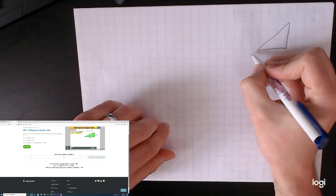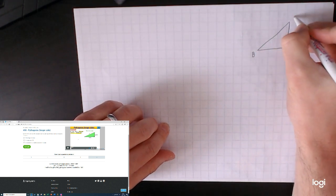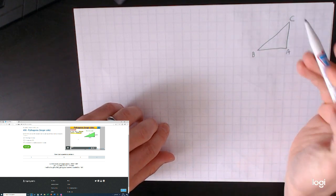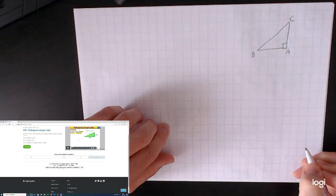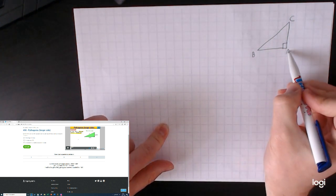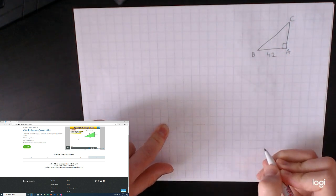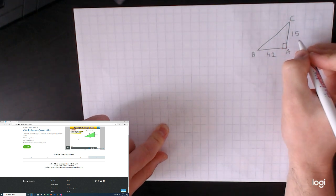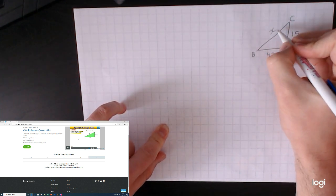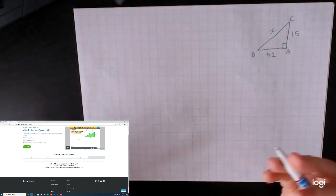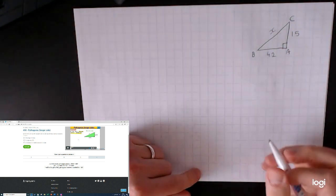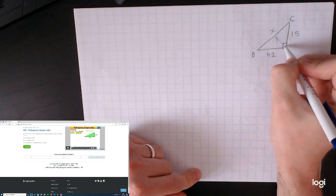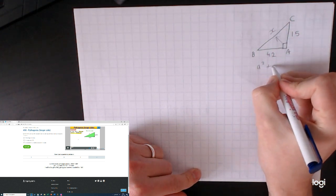Next it tells me AB is 4.2, so from A to B is 4.2, and CA from C to A is 1.5. Find the length of BC. So this is my x, my unknown. I don't have to call it x but I'm just used to calling the unknown x. Give your answer to one decimal place. Here's my two sides. I assess that since I'm after the side opposite the right angle, I'm after the long side, so it's going to be Pythagoras again: a squared plus b squared equals c squared.